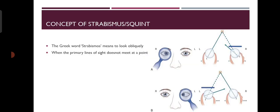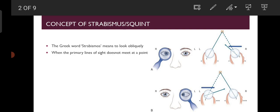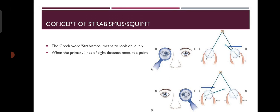Squint or strabismus means to look obliquely. So you can see there is a visual axis of our eyes. What is a visual axis? If we look at an object, the line touching the object, my pupil and my retina, forming a clear image on my retina — that is the visual axis of one eye.